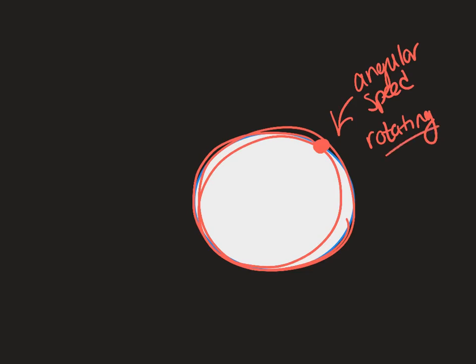So if you ever have driven a car before, one example of angular speed is rpms, because this is the revolutions per minute. It tells you how fast it's rotating.